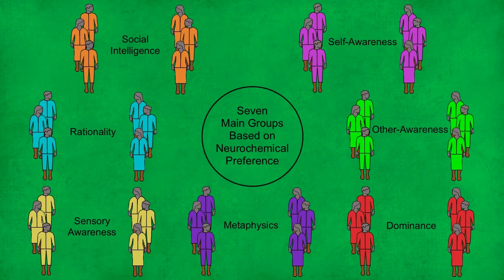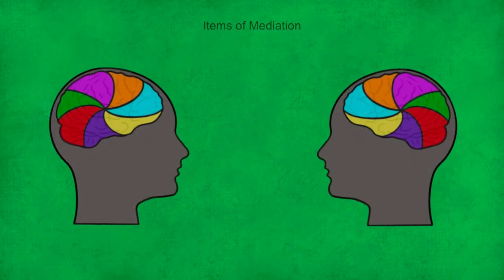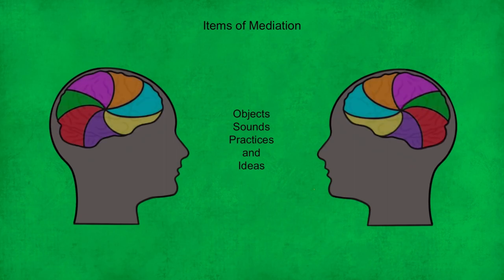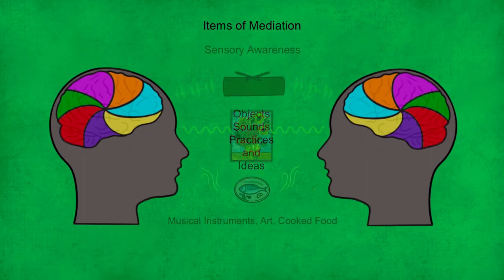The way in which these groups stimulate each other's preferred neurochemical processes is through what can be referred to as items of mediation. Items of mediation are all the objects, sounds, practices, and ideas that stimulate corresponding areas of human brains — they act to mediate between the brains of humans, as does any component of culture. Here's a few quick examples of the seven main types of items of mediation.